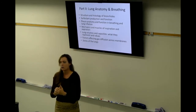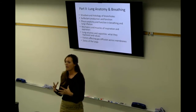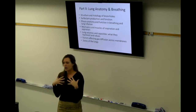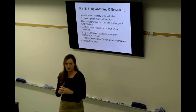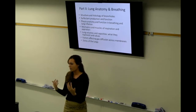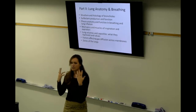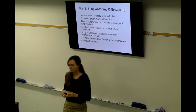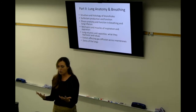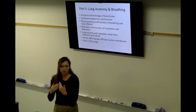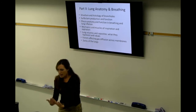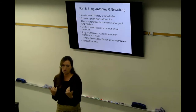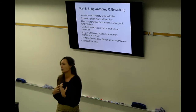We breathe by contracting our muscles — first the diaphragm going down and the external intercostals lifting the chest upward. If we want to take a bigger breath, we add the scalenes, sternocleidomastoid, and pectoralis minor. If we want to breathe out, the diaphragm just relaxes. But if we really want to force air out, we contract our abdominal muscles and use the internal intercostal muscles to pull the chest wall down.